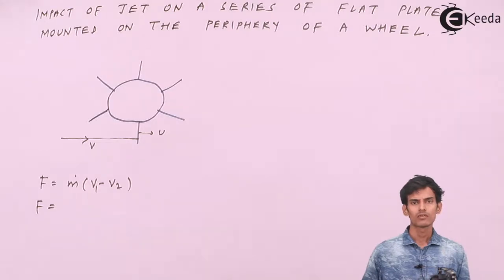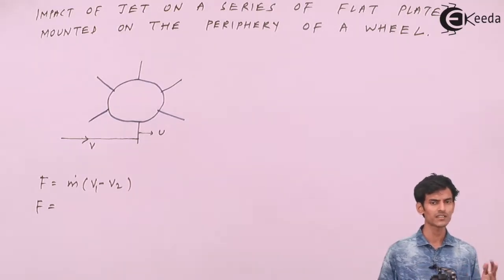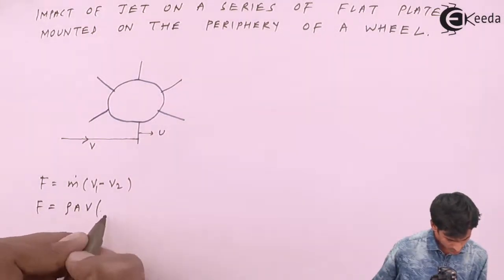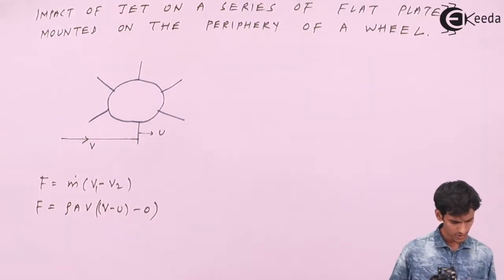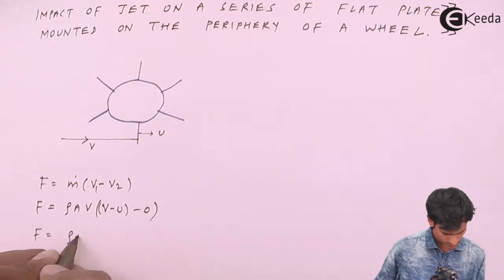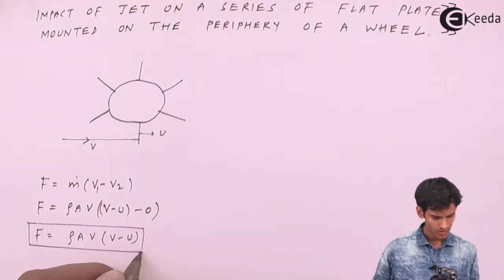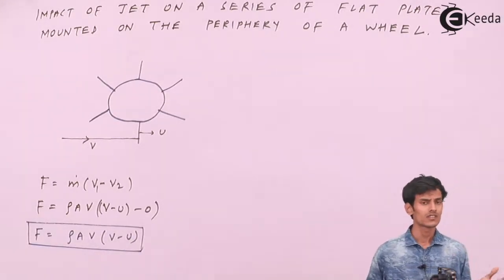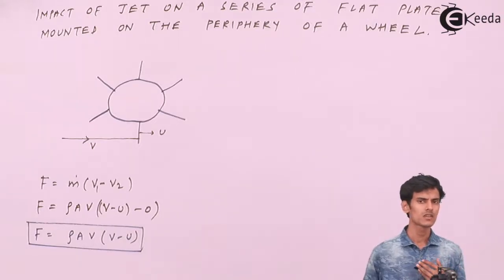The formula remains the same: m-dot times (V1 minus V2), as we are calculating the x-component of velocity — both the x-component of velocity entering and the x-component of velocity leaving. The formula for the force exerted by a jet on a series of flat plates mounted on the periphery of the wheel is: F = ρaV(V − u).